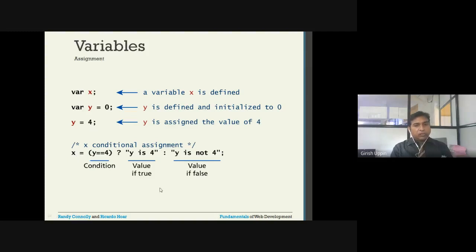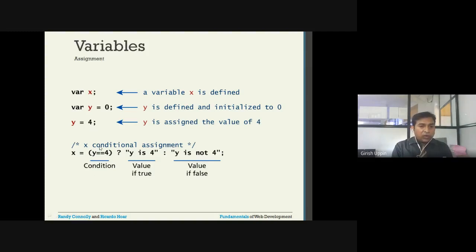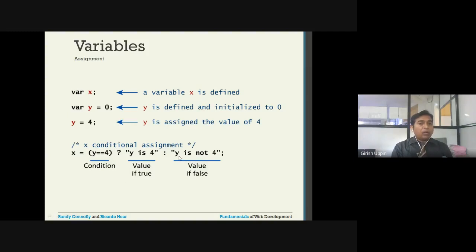The conditional (ternary) statement uses a question mark and colon. You assign a value where the right-hand side is a conditional expression: up to the question mark is the condition, after the question mark and before the colon is the true value, and after the colon is the false value. For example, if y equals 4, the condition is true and x gets the text 'y is 4'; if the condition is false, x is assigned the text 'y is not 4'.